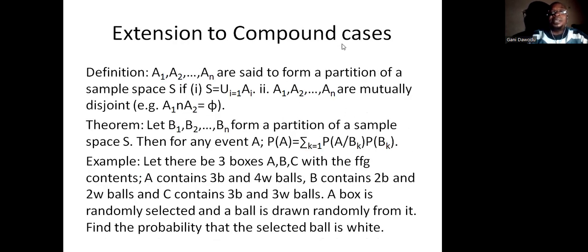We will say that the A_i's form a partition of a sample space S if they unite to form S, and no pair of them are not disjoint. Any pair you take are mutually exclusive. Theorem: Let B_1, B_2, ... B_n form the partition of a sample space S. Then for any event A, probability of A will be sum of probability of A given B_i times probability of B_i.